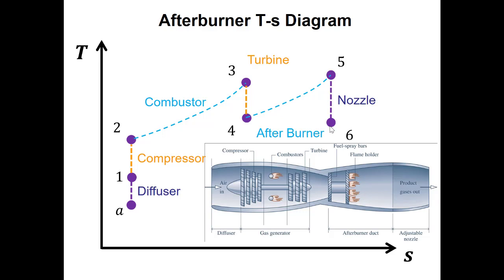Higher thrust performance from the afterburner comes at the expense of burning more fuel, which is why you wouldn't see it on a commercial airline — commercial travel demands very high efficiency because planes fly constantly and the cost and environmental impact are significant. But in military applications the extra performance can be worth it. That concludes our lecture on turbojet engines — happy to answer any questions on this material or on thermodynamics and plans for the rest of the semester.